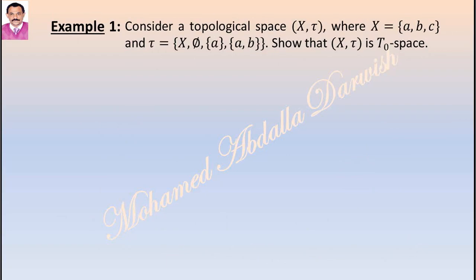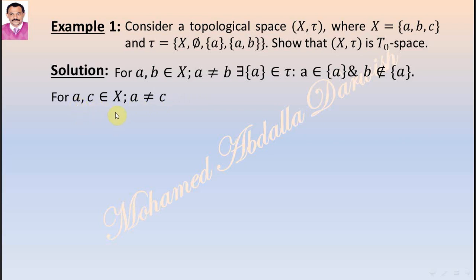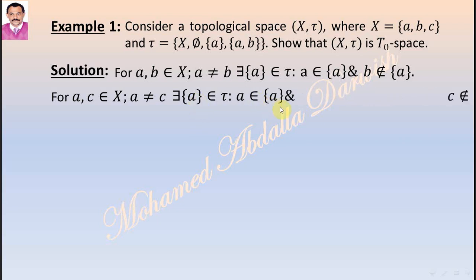Example 1: Consider a topological space (X, T) where X is the set {A, B, C} and T is the collection containing X, the empty set, the singleton set {A}, and the set {A, B}. Show that (X, T) is a T₀ space. For A and B in X with A not equal to B, there exists an open set {A} such that A is in {A} and B is not in {A}. For A and C in X with A not equal to C, there exists singleton {A} open in X such that A is in {A} and C is not in {A}.